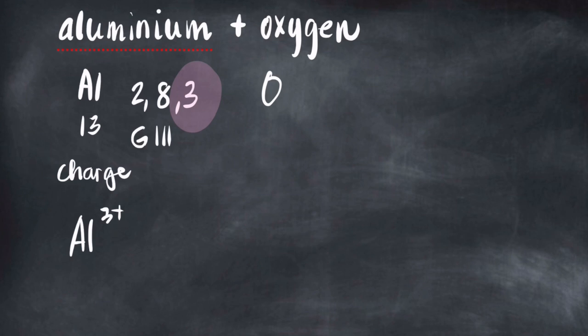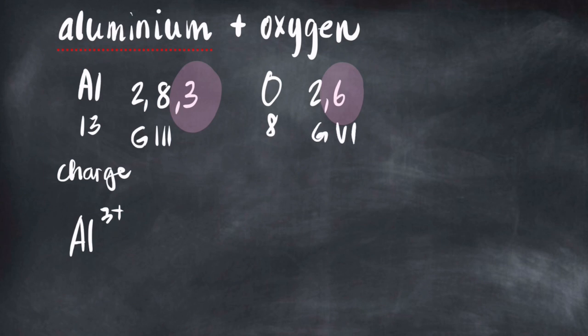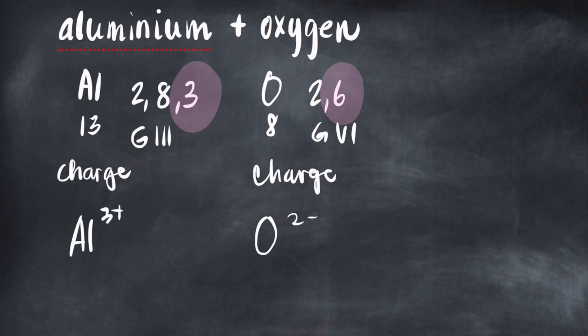Oxygen, on the other hand, has an atomic number of 8. Therefore its electronic structure is 2, 6. The valence electron count is 6, so it is in group six. Being in group six, the charge is 2−.